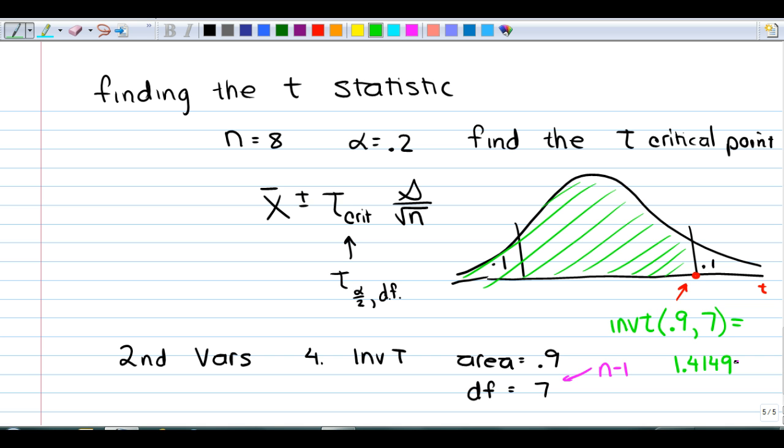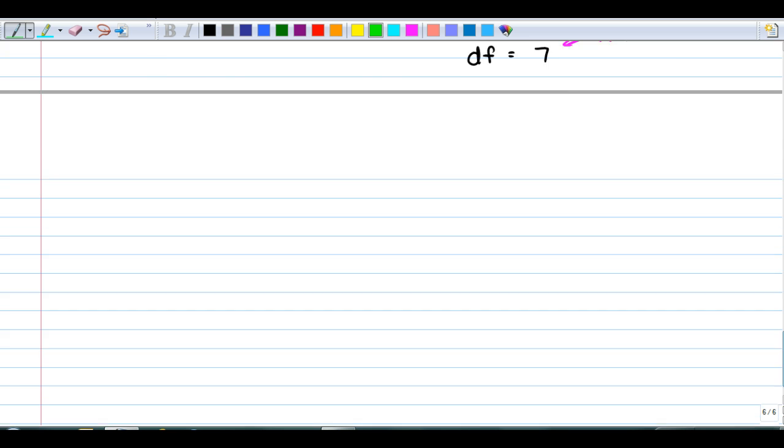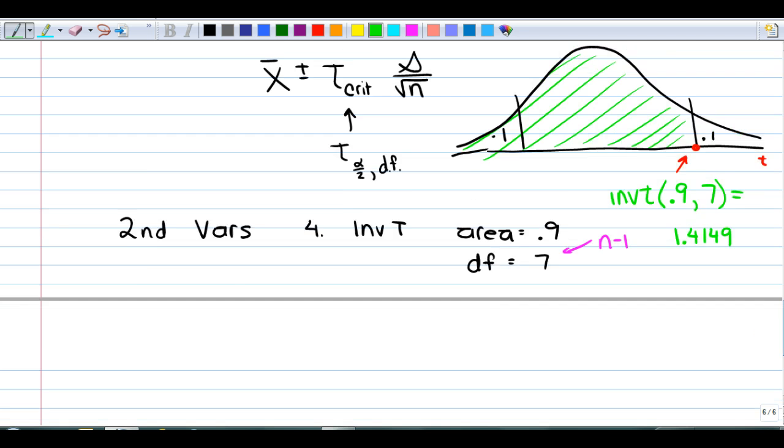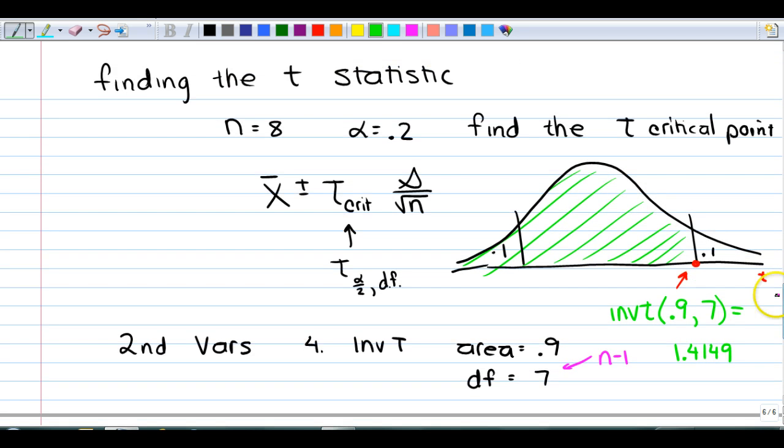If you don't have a calculator with an INVT function, you're going to have to use the tables in the back of the book and you won't be able to get a precise value for any possible alpha. You'll have to choose the most conservative closest alpha you can get. But I believe that is going to fix you right up for confidence intervals.